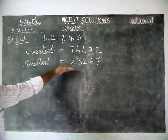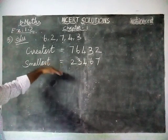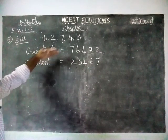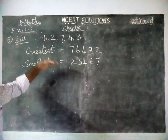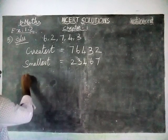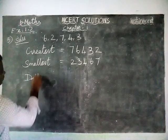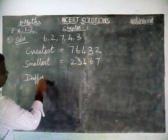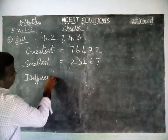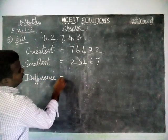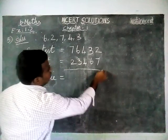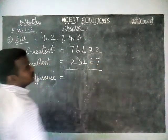They ask us to find the difference between the greatest number and the smallest number. So the difference is equal to: